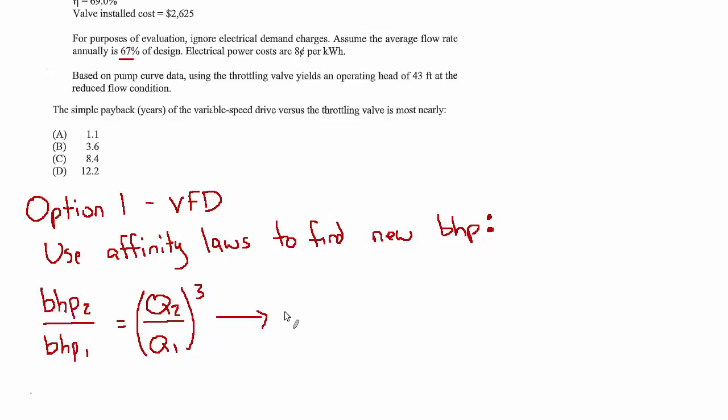So plugging in and solving for BHP2, we can take BHP1 5.8. And the ratio of Q2 to Q1, we could figure out what the actual number is and we might need to later, but we know it's 67%, so that ratio is just 0.67. And that's getting cubed. So the new horsepower is going to be 1.74. And that's still brake horsepower. So there still could be another loss in terms of electrical efficiency with which the electrical energy in an AC motor is converted to actual brake horsepower at the shaft that turns the pump.